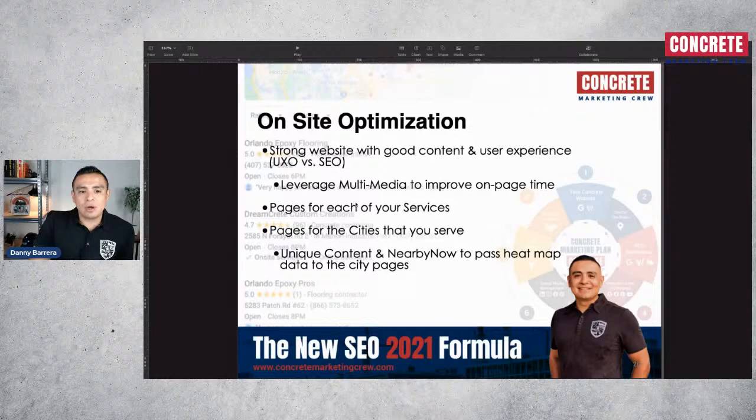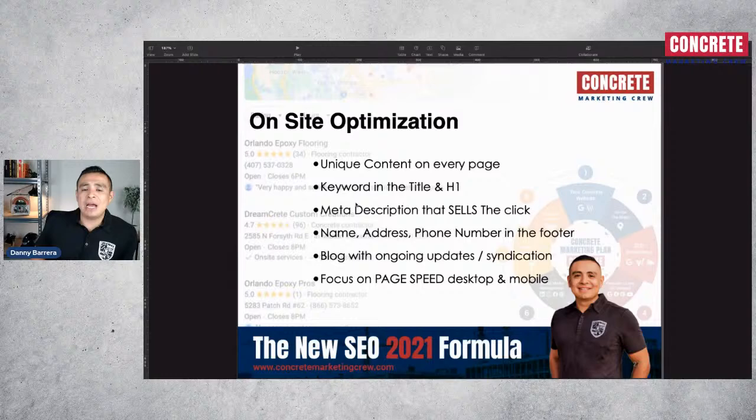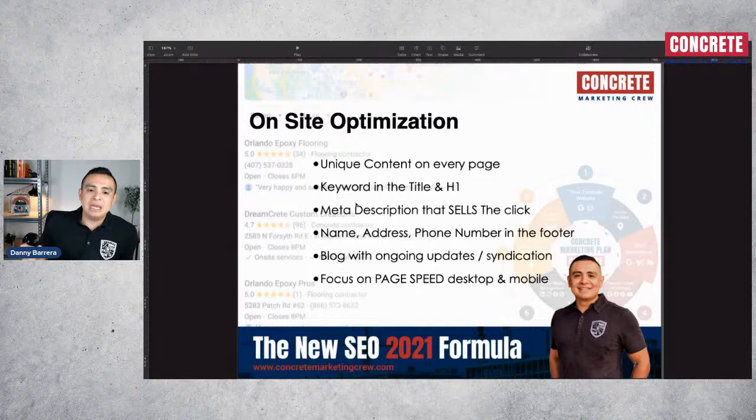Let's talk about the last section of on-site, on-page optimization: you need content on every page. Not only do you need all those pages created, but you need unique content. Every single page must have a keyword in the title and a keyword in the H1.